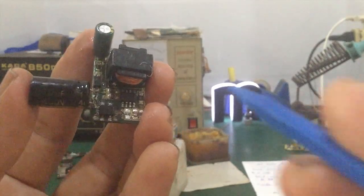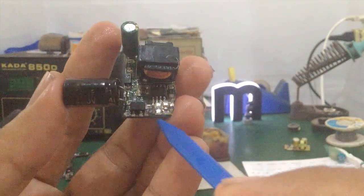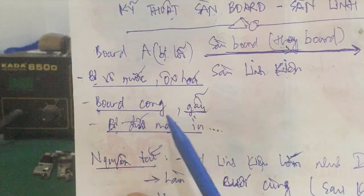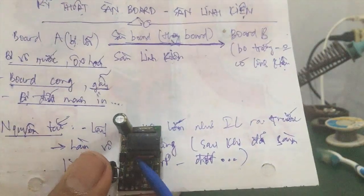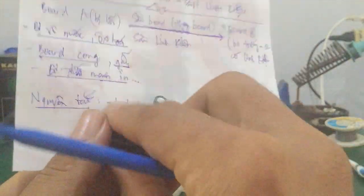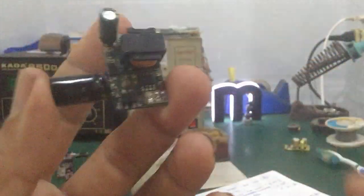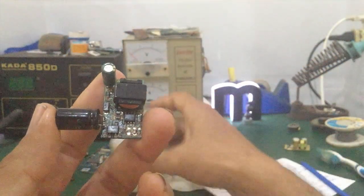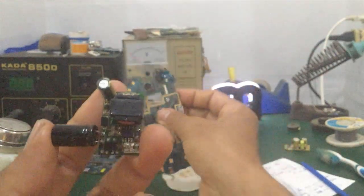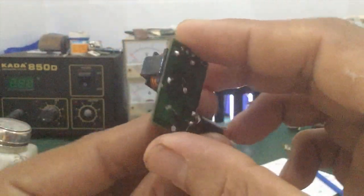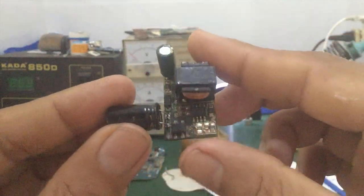Please observe. This completes the process of transferring components from a faulty board — one that has water damage, oxidation, board warping, cracking, or broken PCB traces — to a blank board (bo trắng, a board with no components). The transfer was successful. This is a LED driver power board, and you can apply this method to phone motherboards as well. If you have any questions, leave a comment and I will support you. See you in the next video — goodbye everyone!